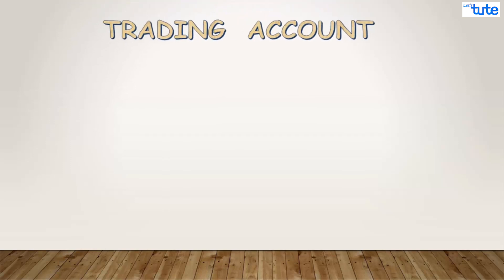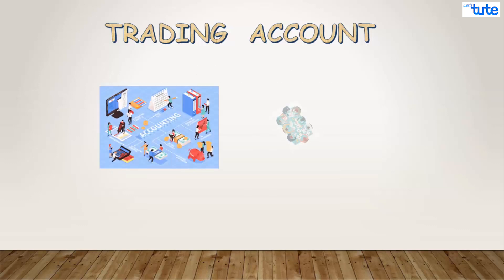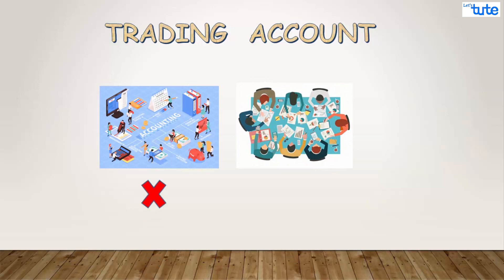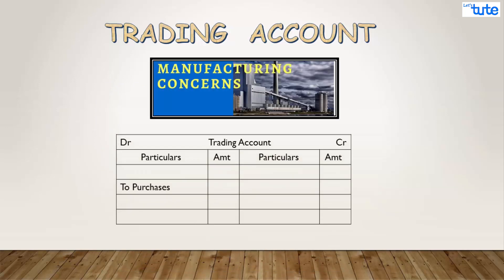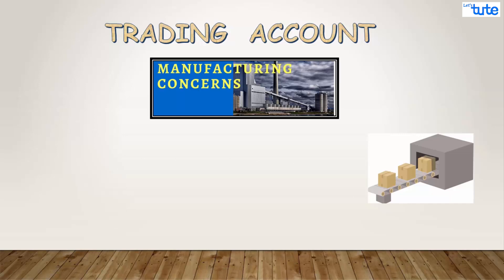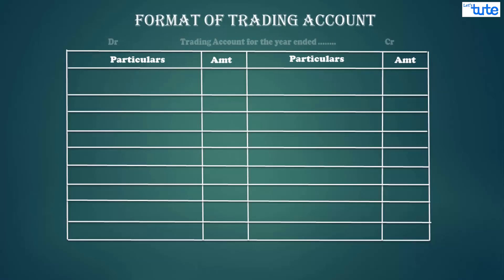Generally, a trading account enables a company to determine its profitability. With the data provided by it, the company's accounting and management team can decide where to cut expenses and increase profits. In the trading account of a manufacturing company, the production cost as calculated by the manufacturing account should be used in place of purchase figures. It mainly shows the quantities of finished goods manufactured and sold, along with opening and closing balances of stocks.